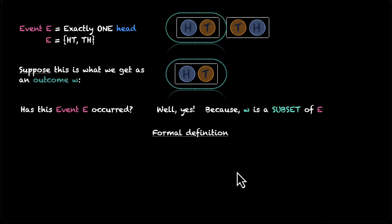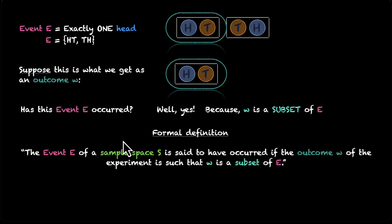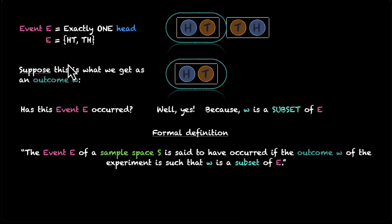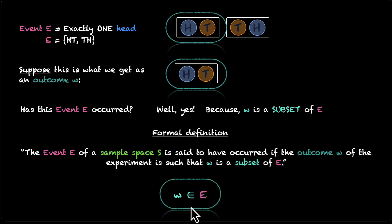Let me write it neatly. The formal definition of occurrence of an event is this. The event E of a sample space S is said to have occurred if the outcome W of the experiment is such that W is a subset of E. That's it. When your outcome is a subset of your event, that's when you know that the event has occurred. In math, the way you write it is like this: W is a subset of E, or you can say that W belongs to E. And whenever your outcome does not belong to the event E, that's when you say that the event has not occurred.